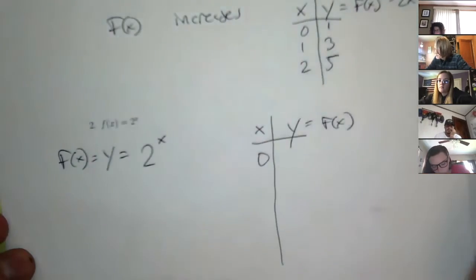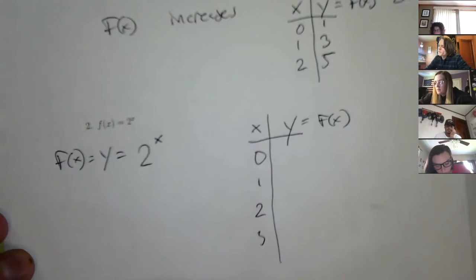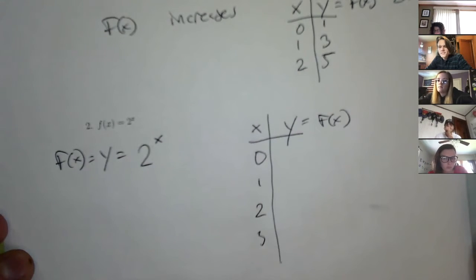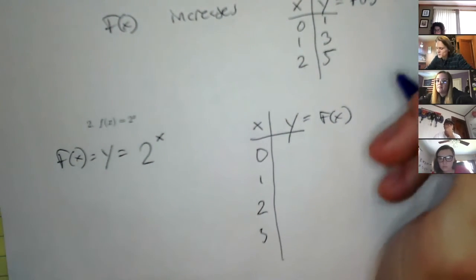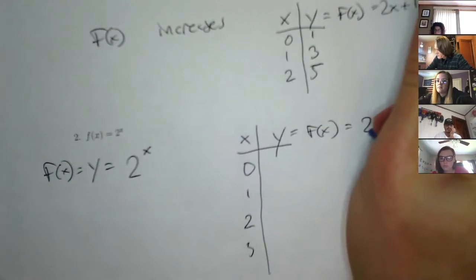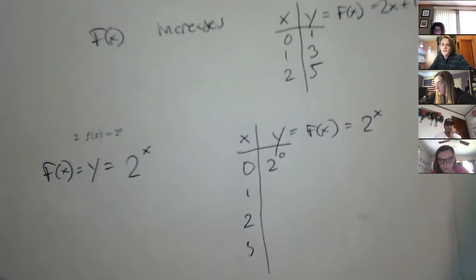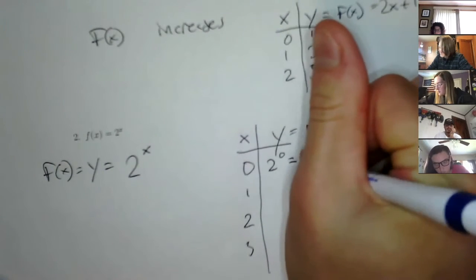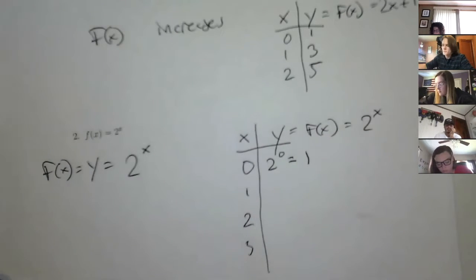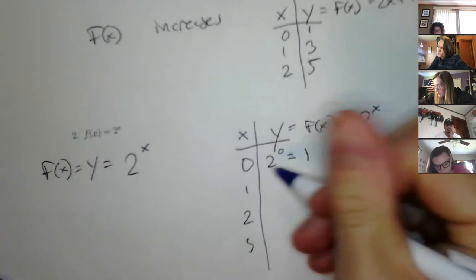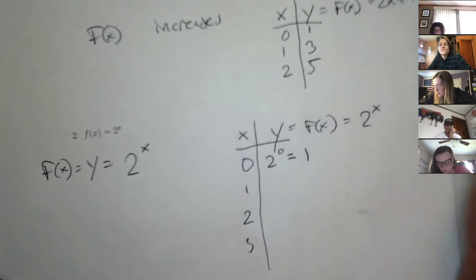I'll plug in 0, 1, 2, and 3. When I plug in 0, I get 1 — remember our exponential rules: anything to the 0 is always 1. 2 to the 1 is 2. 2 to the 2 is 4 — you're multiplying 2 by itself twice, so it's 2 times 2 equals 4. And 2 to the 3: you're writing 2 times itself 3 times, so 2 times 2 is 4, and 4 times 2 is 8.